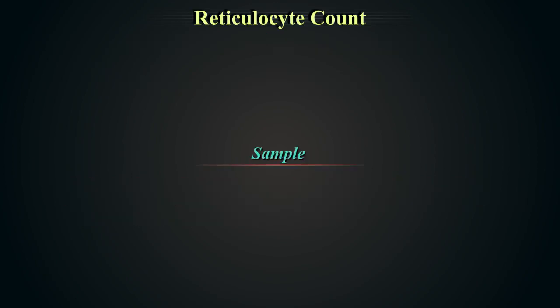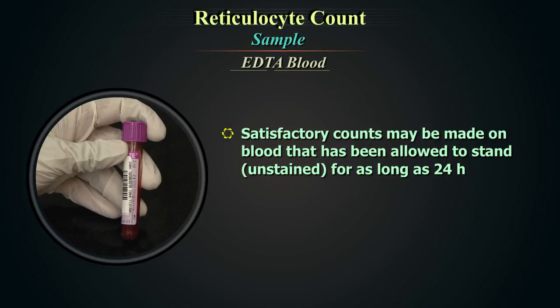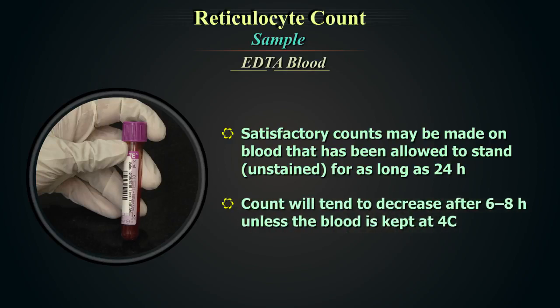The preferred sample for reticulocyte count is EDTA anticoagulated blood. Satisfactory counts may be made on blood that has been allowed to stand unstained for as long as 24 hours, although the count will tend to decrease after 6 to 8 hours unless the blood is kept at 4 degrees centigrade.